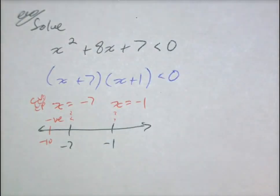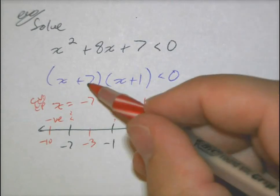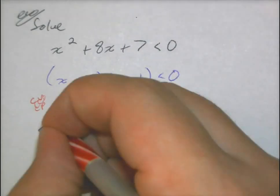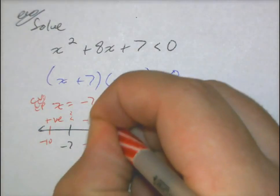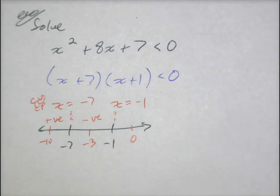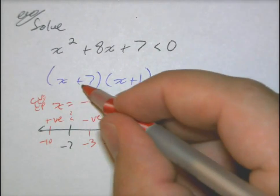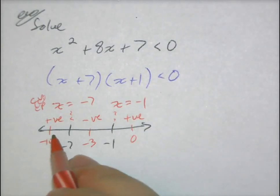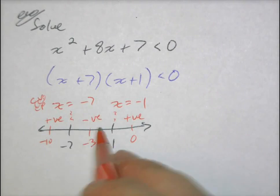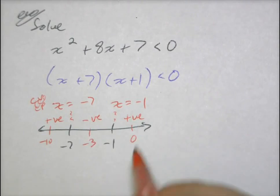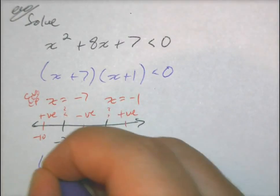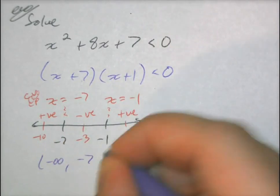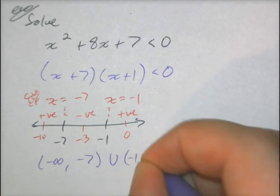Between negative 7 and negative 1 is a negative interval. Then bigger than negative 1, I test 0: 7 times 1 is positive. Do not assume the pattern will always be positive, negative, positive — it will not always be true. So I have everything from negative infinity to negative 7 (not included), union negative 1 to infinity. And there it is.